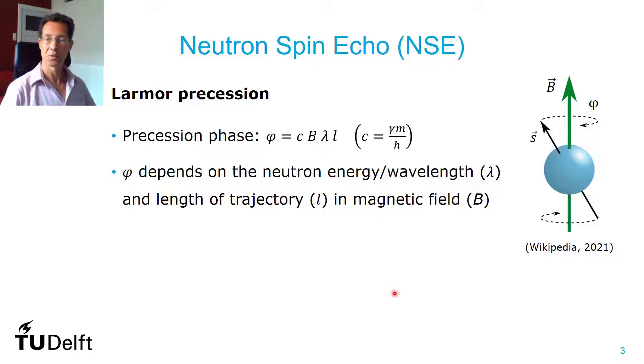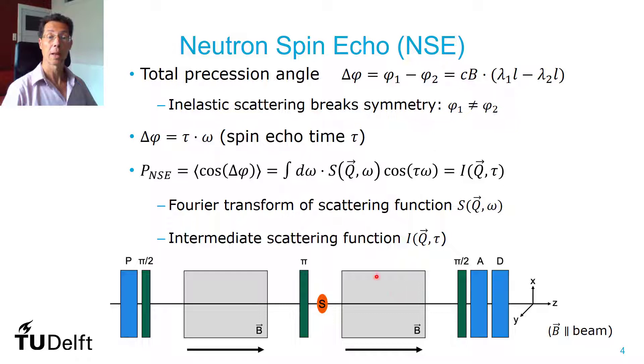And you can use that to do spectroscopy, which you have set up with polarized beams. You start precession. Then you have a pi flipper to effectively reverse precession in the second arm and the sample, a pi over two flipper to stop the precession, an analyzer and a detector.